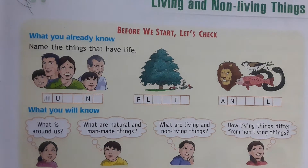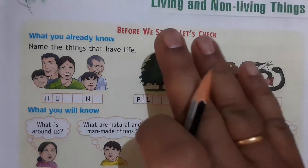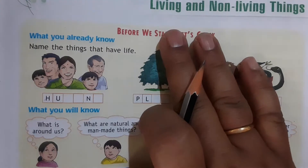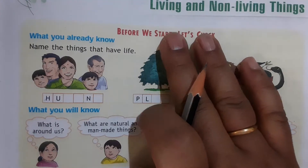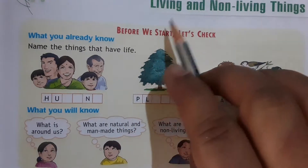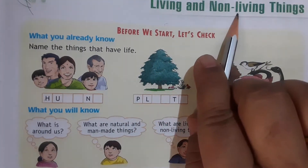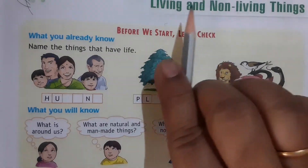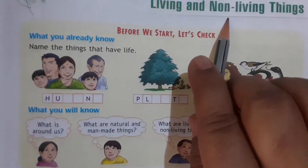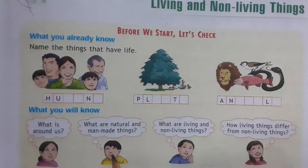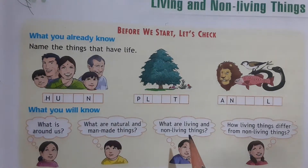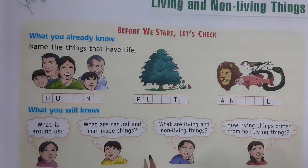Good morning children. We will learn today the first chapter of our EVA book, Living and Non-Living Things. Open your first chapter, take your pencil, and we will underline the difficult words of this chapter.